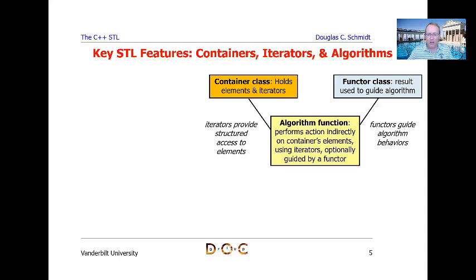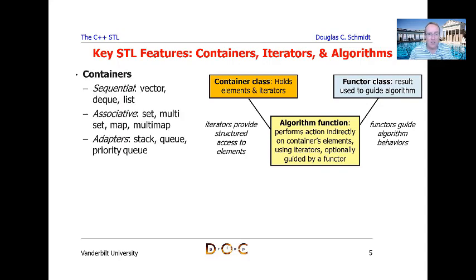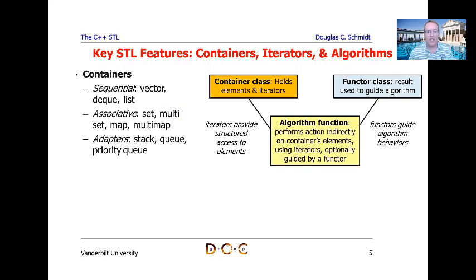Here's a pictorial view of the three key elements. The first thing we're going to focus on, which we'll begin today, is the concept of a container, which is basically an abstract data type. There are several different categories of containers: sequential containers, associative containers, and adapters. The easiest way to think about a container is as a way to hold elements and have iterators that can be used to access those elements.